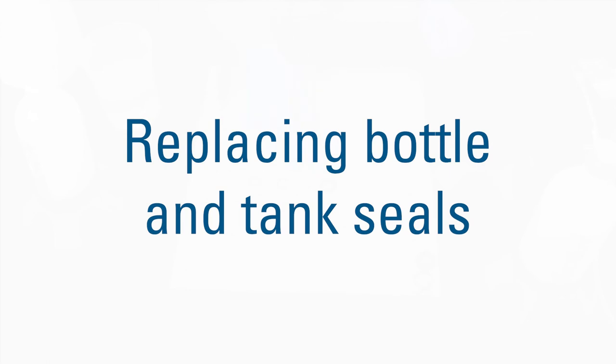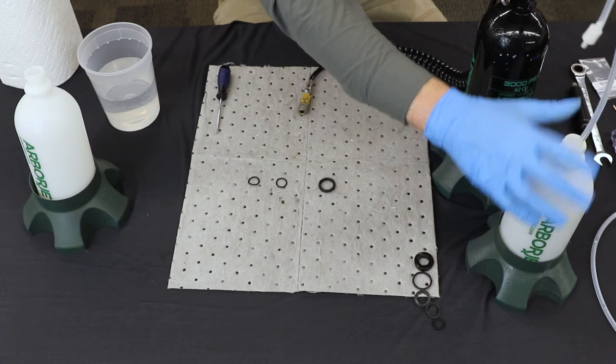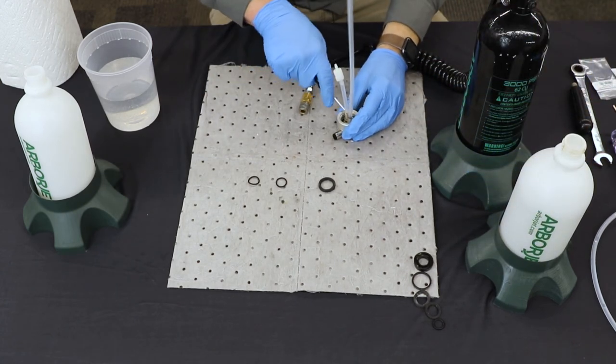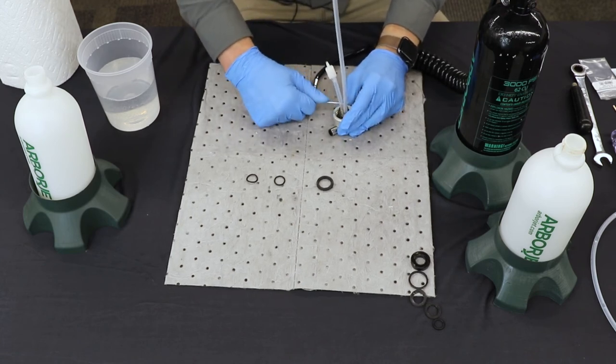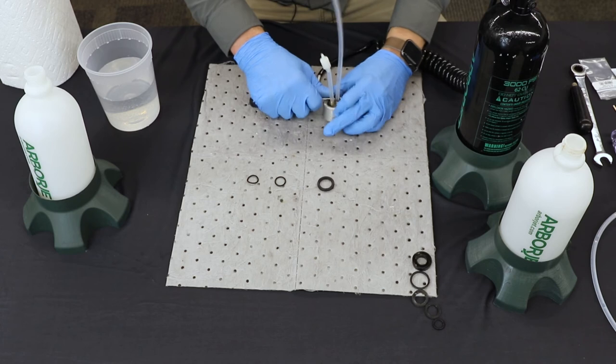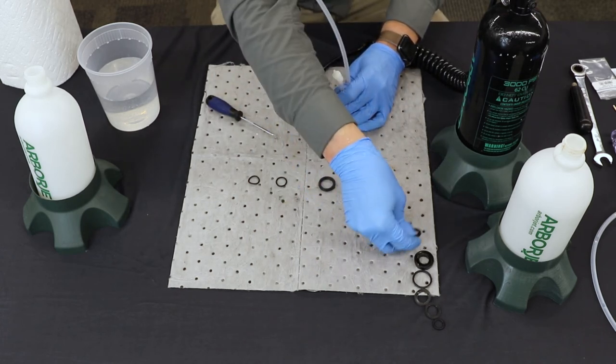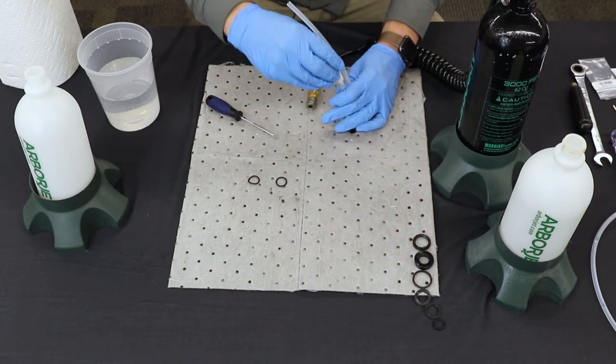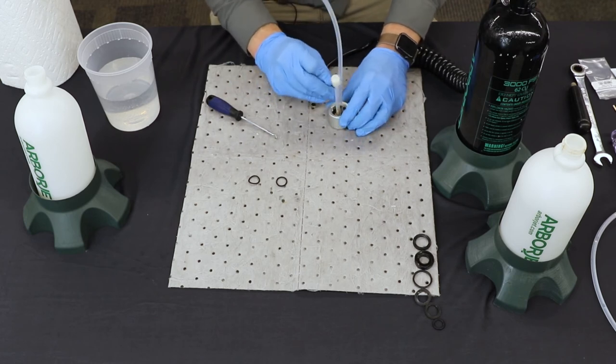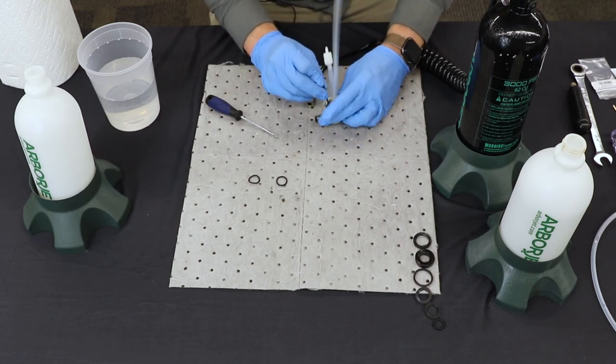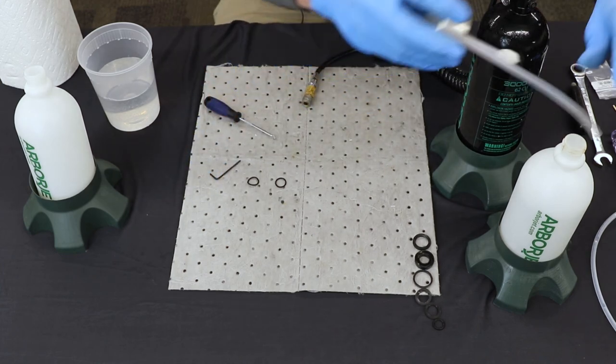Now we're going to put these last couple seals in. We're going to replace the seal inside the bottle cap. I'm just going to pop that old one out. Slide the new one over and then with the little allen wrench that comes with the kit, you're just going to get that into its groove. Just going to tamp it down a little bit. That one's all set.